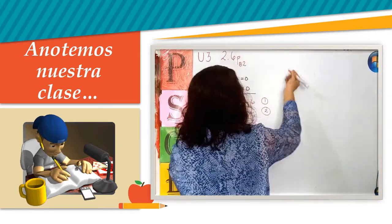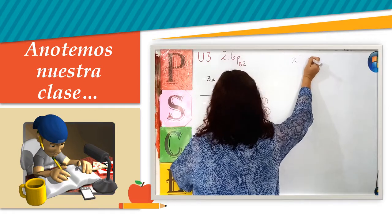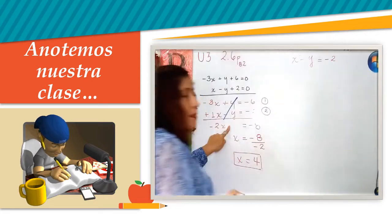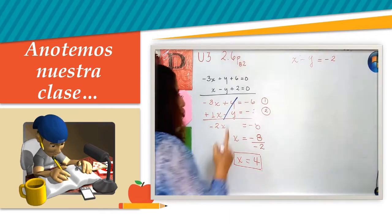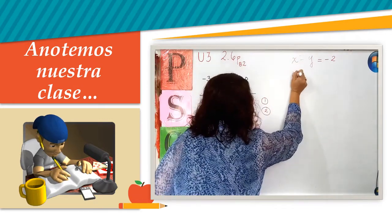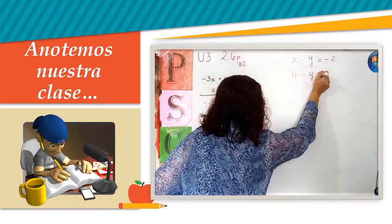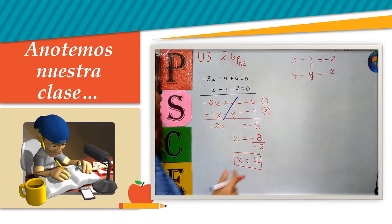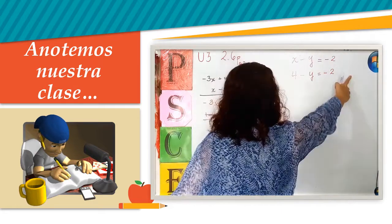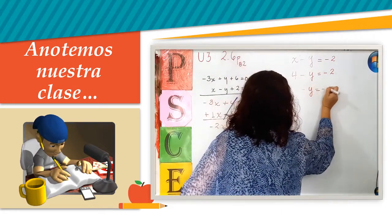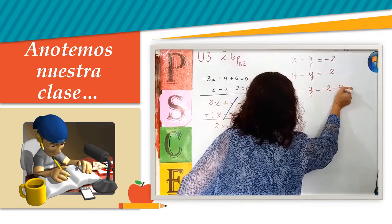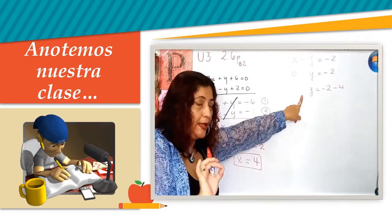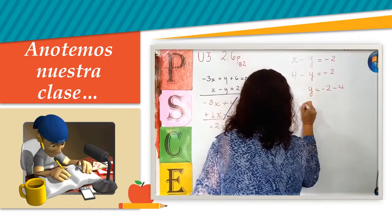Voy a tomarla y diré: x menos y igual a menos 2. Pero yo ya sé que x vale 4. Entonces aquí, en vez de x, voy a poner 4. Menos y igual a menos 2. Ahora, traslado: 4 está positivo, va a pasar negativo. Menos y es igual a menos 2, menos 4. Ojo, y nos ha quedado negativa, y eso vamos a hacer un pasito extra.